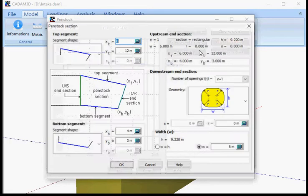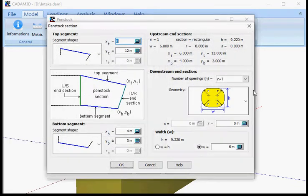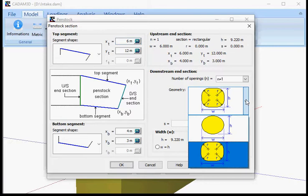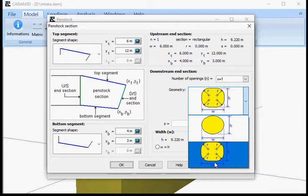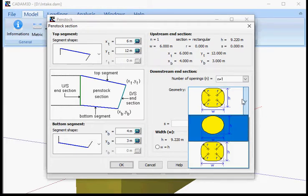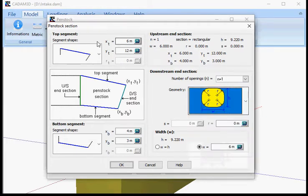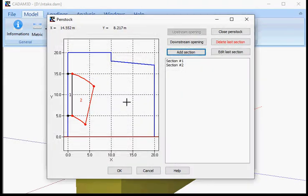If I add another section now, I only have one opening available, not two openings. It can be an opening that is circular or square with rounded shape as you like. You proceed like this until you reach the end or the downstream side of the intake section.